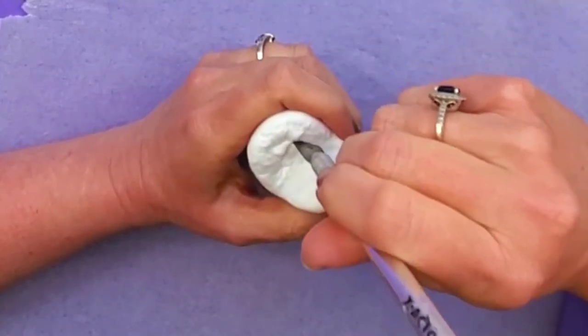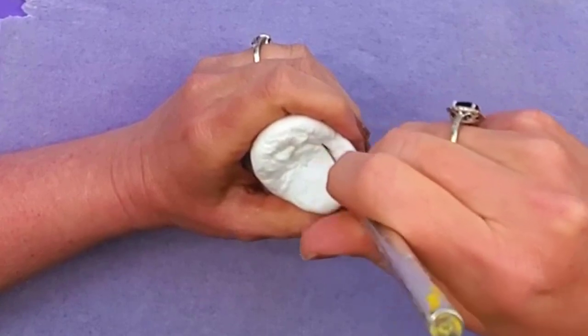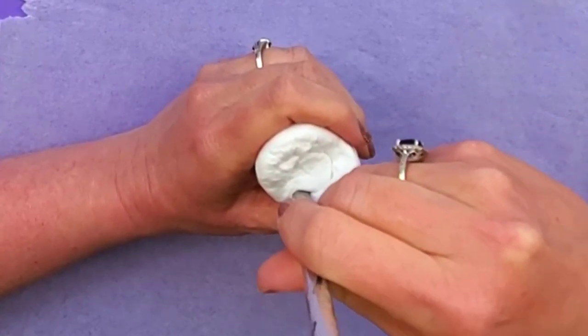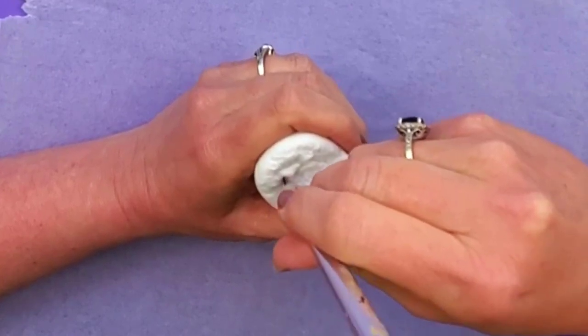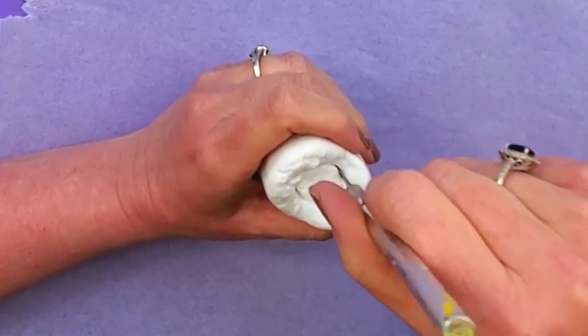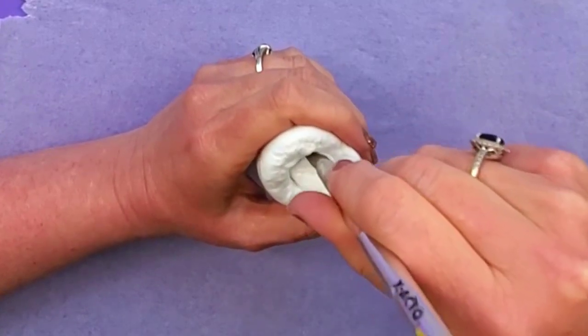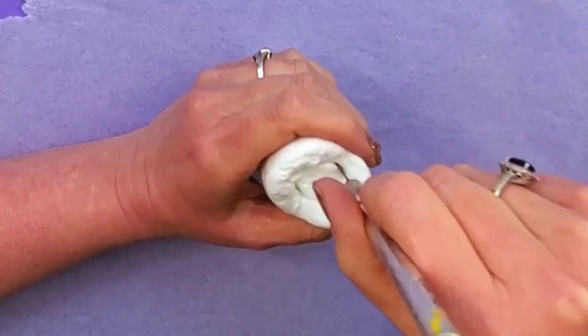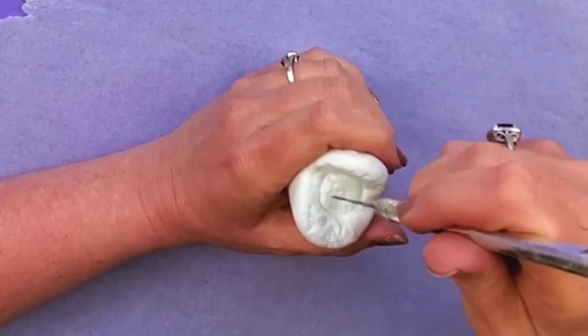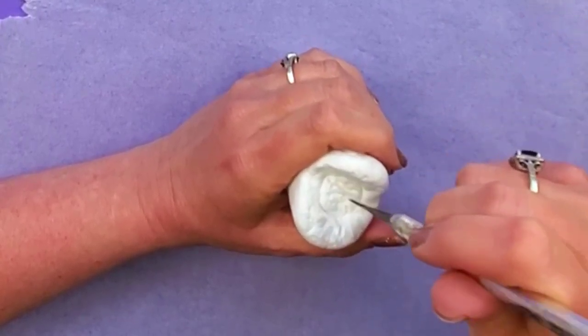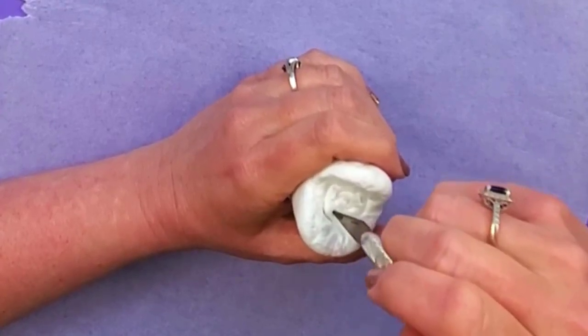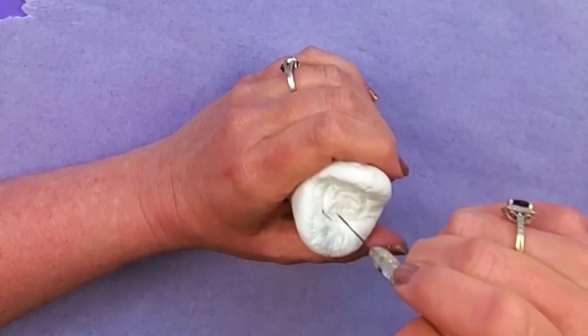I'm just gonna make the circle inside there. And then I'm gonna take my exacto knife and I'm just gonna give this some more texture, and you can kind of make it a little like swirly looking.